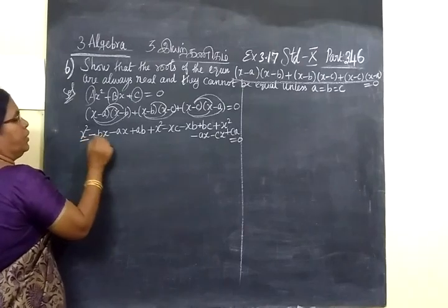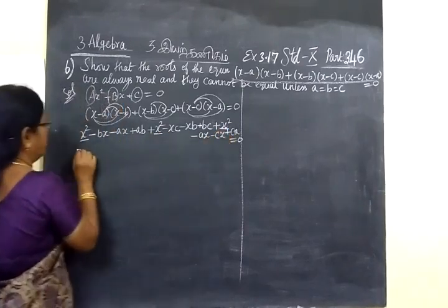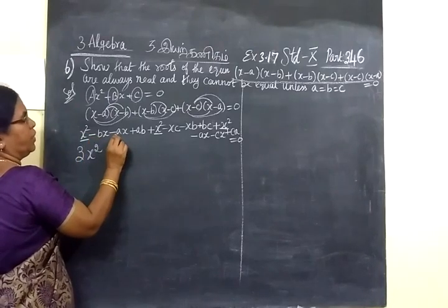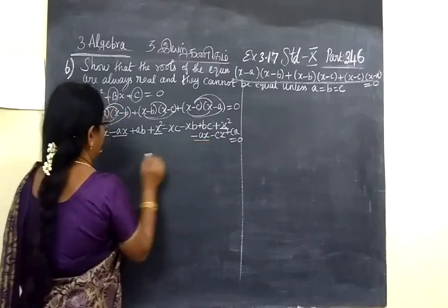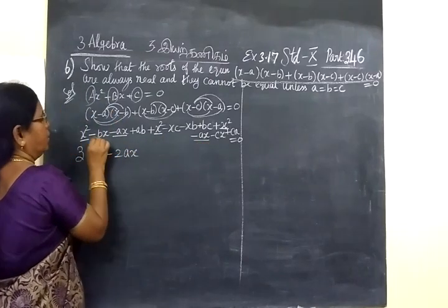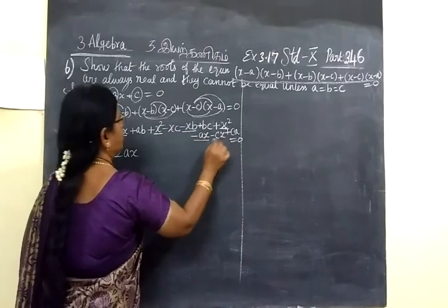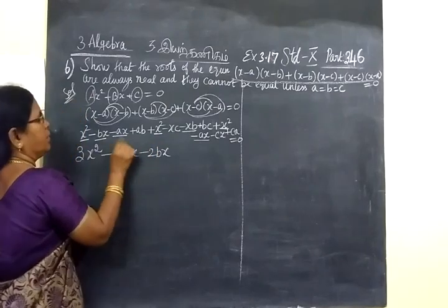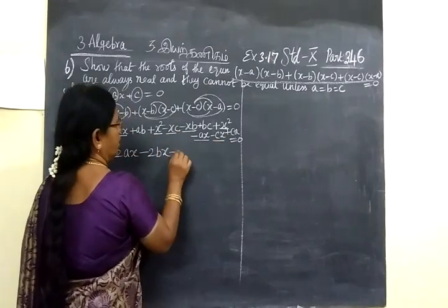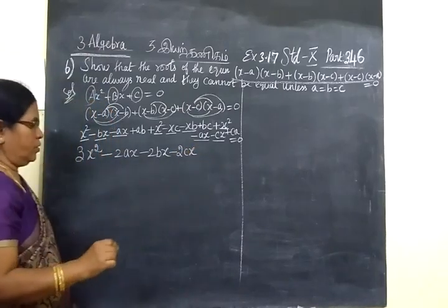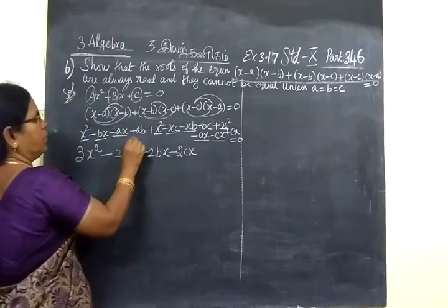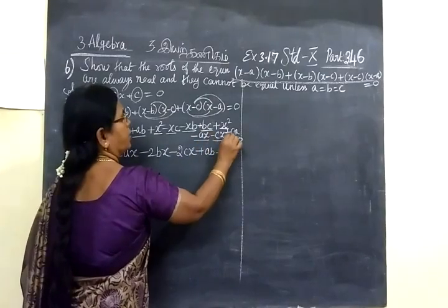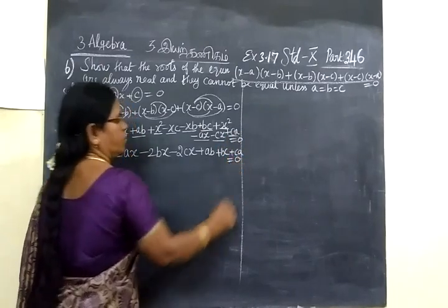Now collecting terms: we have three x² terms giving 3x². For the x terms: minus ax, minus ax gives minus 2ax; minus bx; minus cx; minus bx; minus cx gives minus 2cx. The constant terms give ab plus bc plus ca equal to 0.